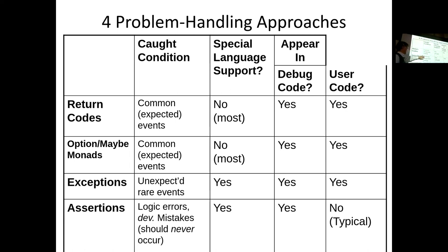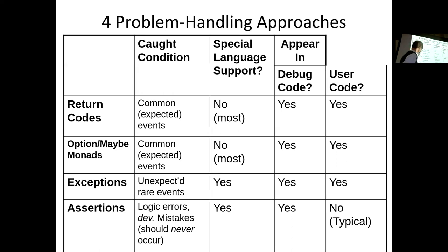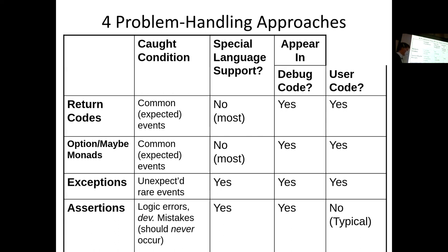Options and maybe monads can also be used. These differ in terms of language support. Broadly, for return codes and options/monads, most languages don't natively support them — some support options/monads effectively. Exceptions and assertions are built into most modern languages. There's a statement for performing an assertion rather than just a function call. The question is: does it appear in debug code? All of them do. Does it appear in user-shipped code? The exception is assertions — assertions do not appear in shipping code.